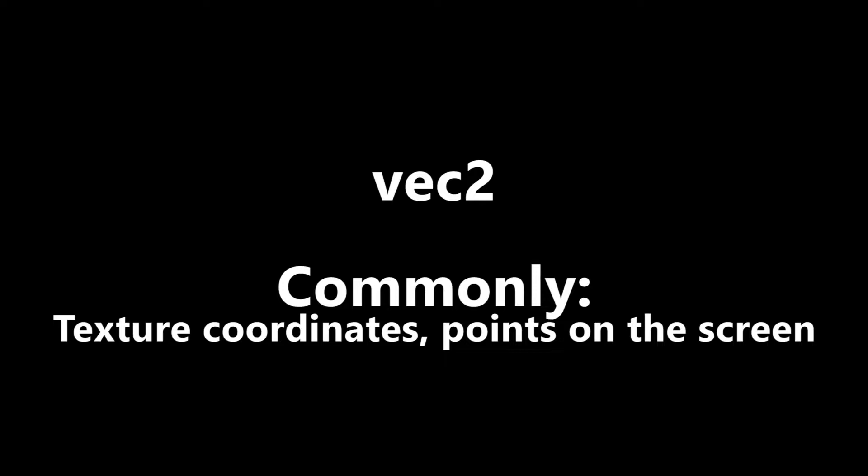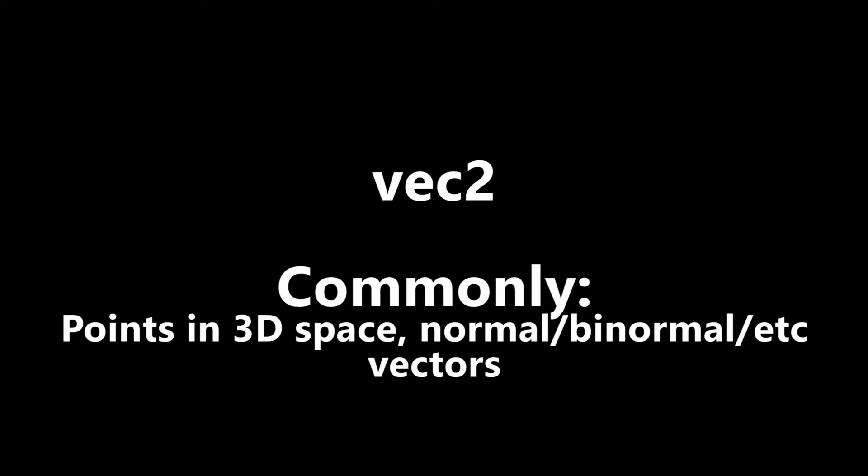You can use them for other things, for example in the fragment shader you often might use a Vect 2 to represent a point on the screen, and note that that's a point on the screen as in where a pixel's final position is and not a point in 3D space. In a 2D game, 3D vectors, Vect 3s, with their components being X, Y, and Z are commonly used to represent points in 3D space or perhaps a normal vector or something that's tangentially related to a normal vector.